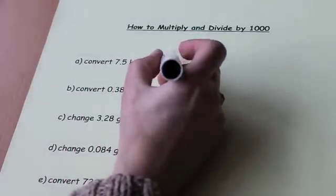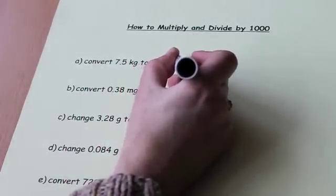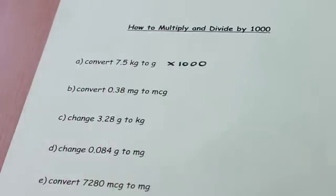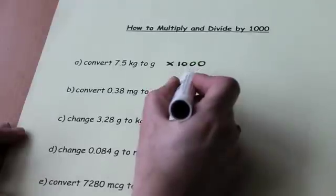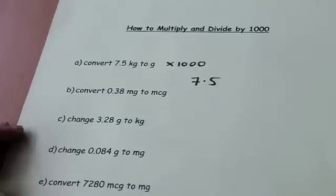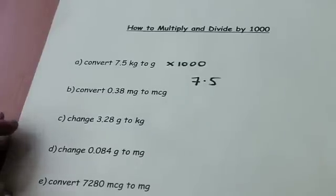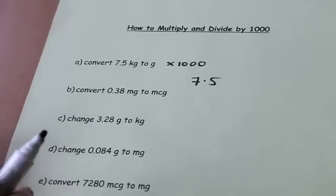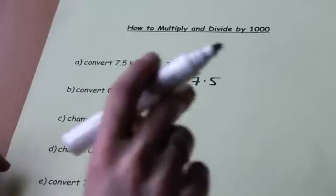So kilograms to grams, multiply by 1,000. So I write down my 7.5 and multiplying by 1,000, the quickest and easiest way to do this is to move the decimal point three places to the right.